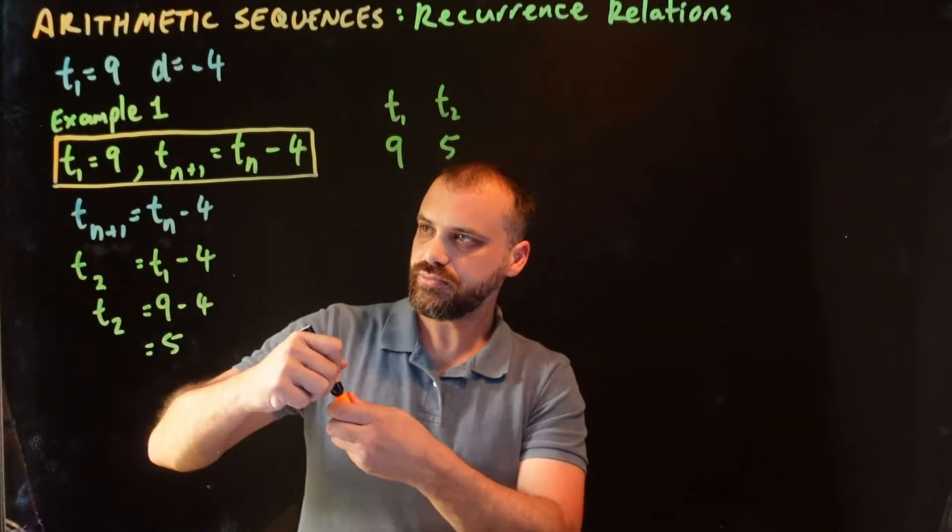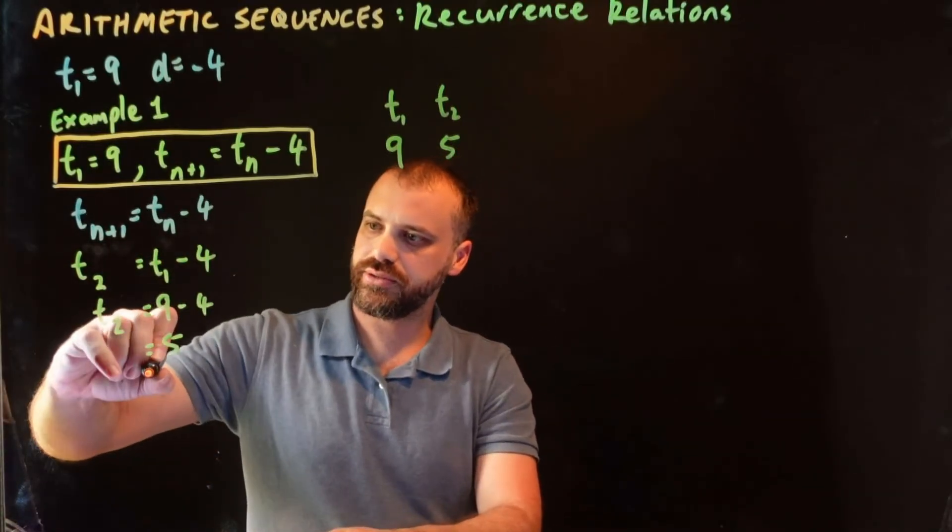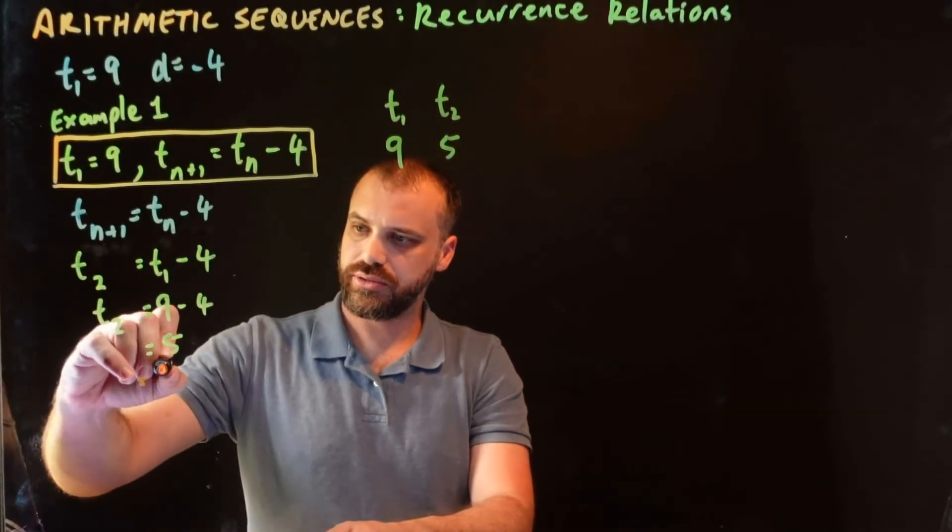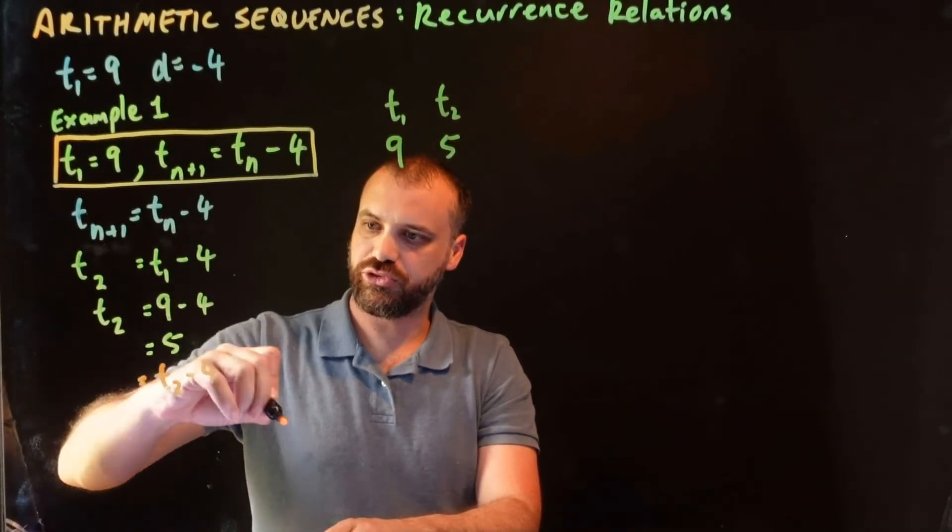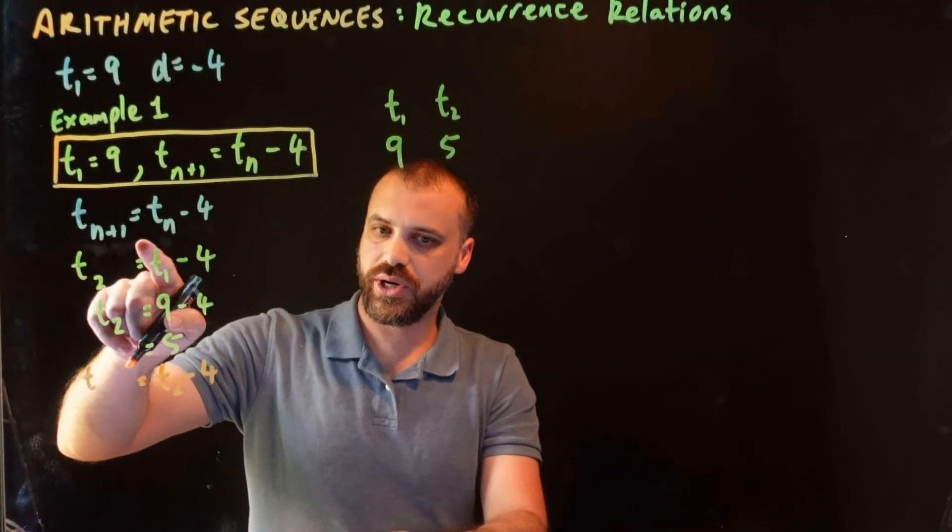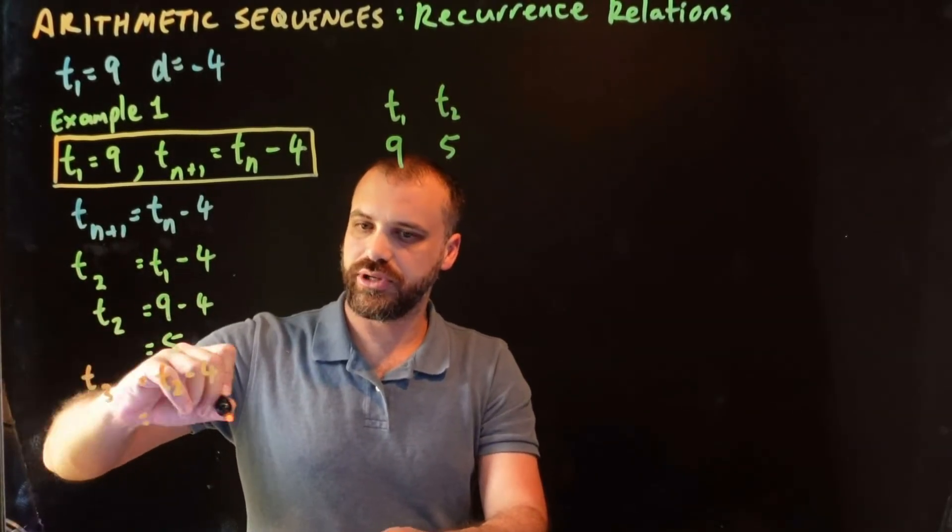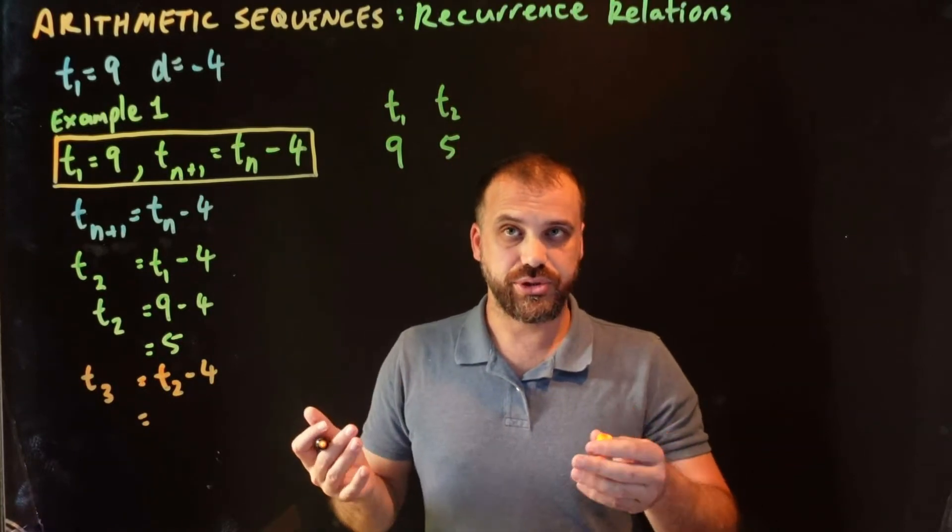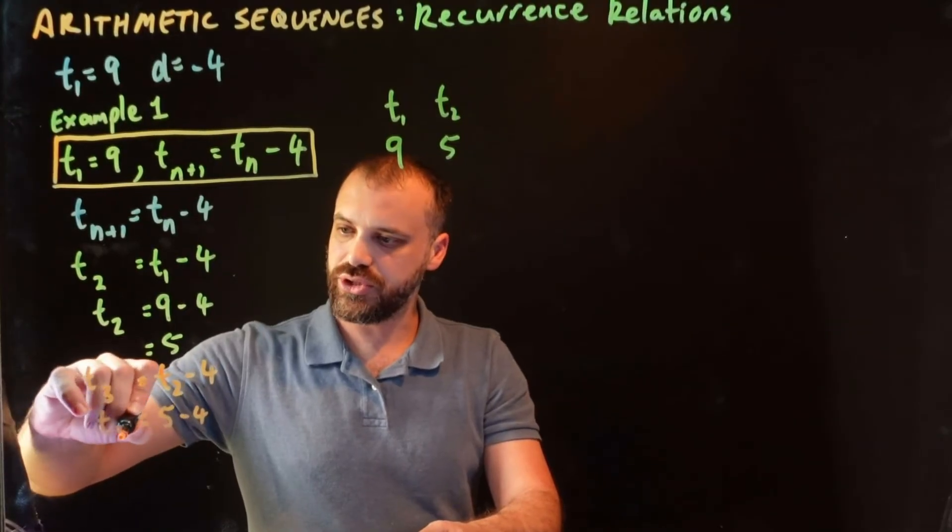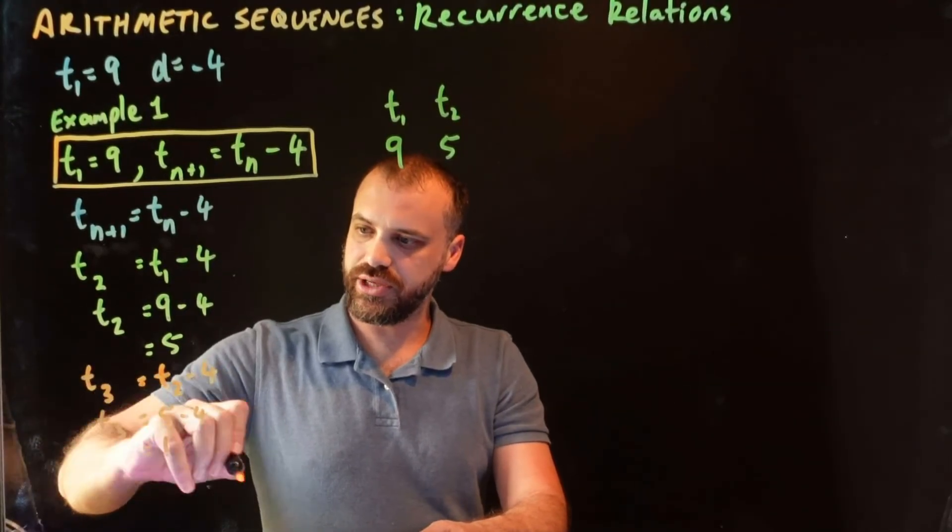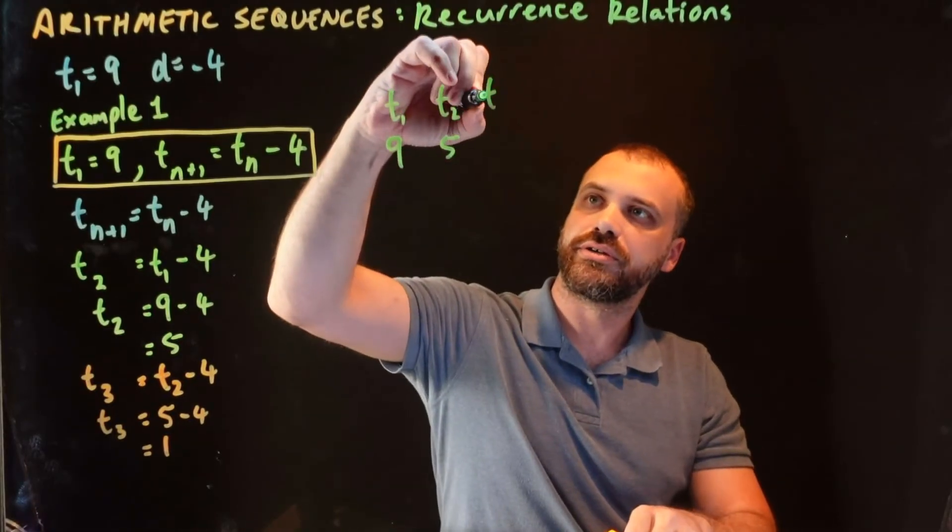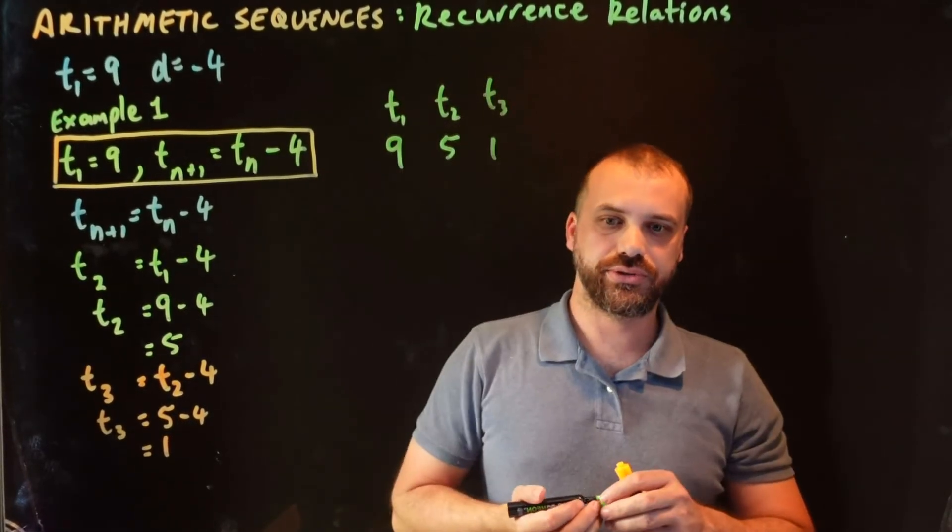This is the formula we're using. If I knew what term 2 was, and I subtracted 4 from it, I would then know what term 2 plus 1 was, term 3. I do know what term 2 is. Term 2 is 5. So, 5 minus 4 is equal to term 3. So, term 3 is equal to 1. Let's write that down. Term 3 is equal to 1.